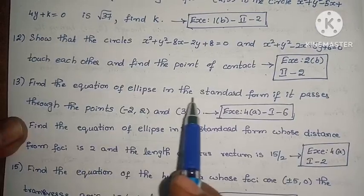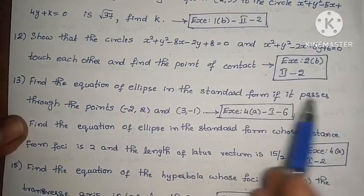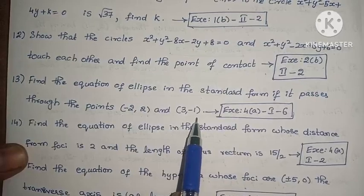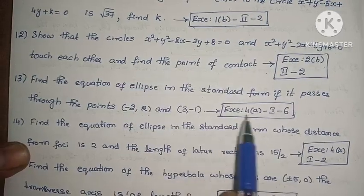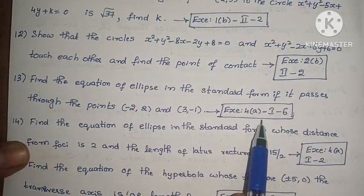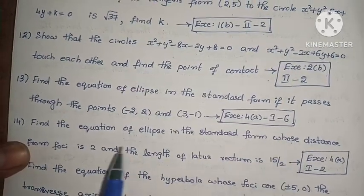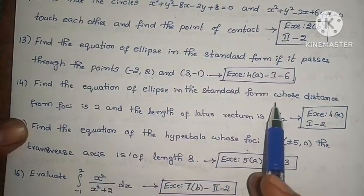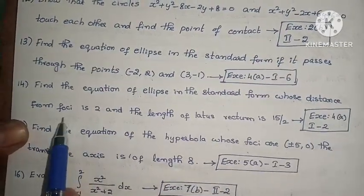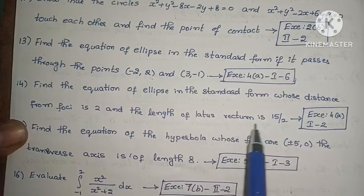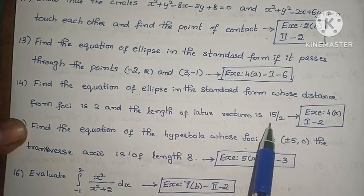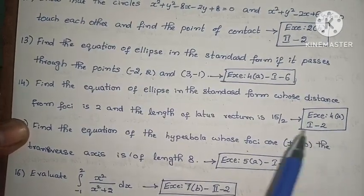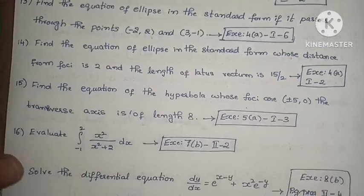Next: find the equation of the ellipse in the standard form if it passes through the points (-2, 2) and (3, -1). This is question 4, first exercise, second problem. Next: find the equation of the ellipse in the standard form whose distance from foci is 2 and the length of latus rectum is 15/2. This is also question 4, first exercise, second problem.